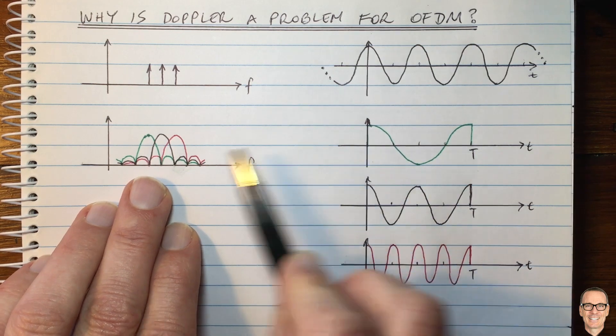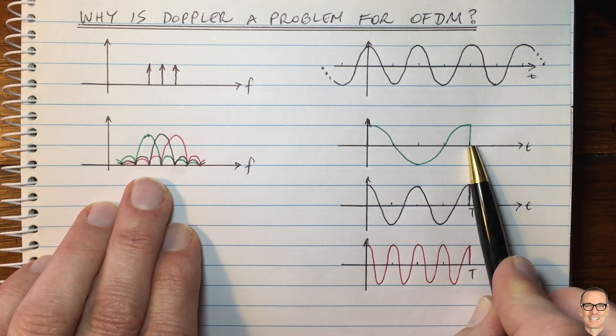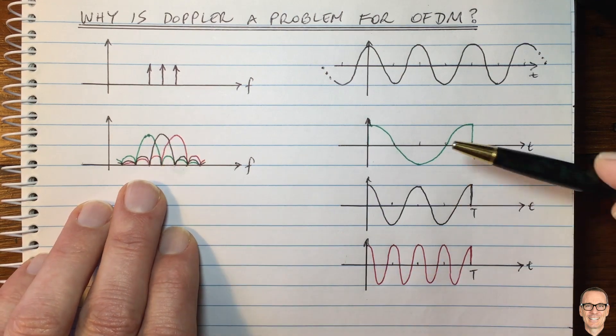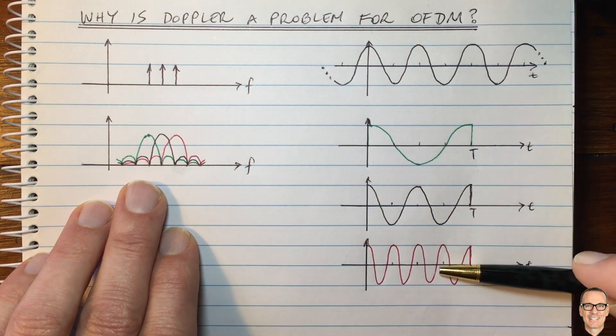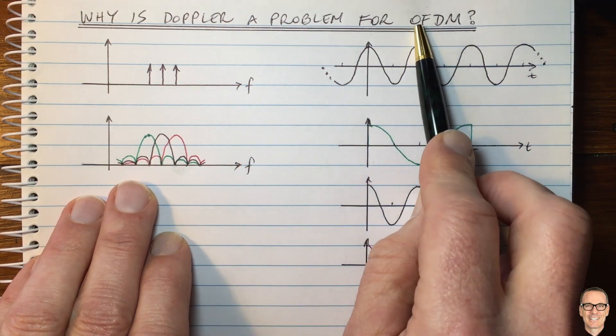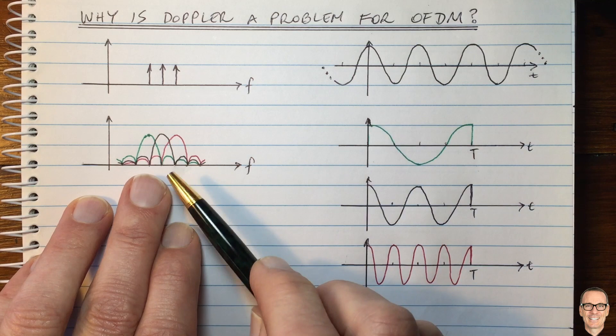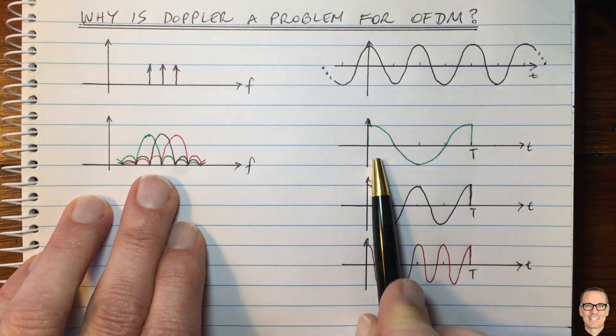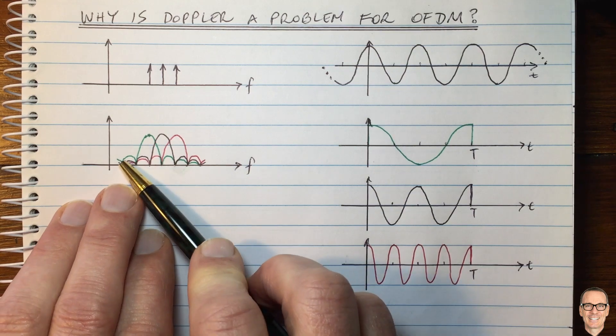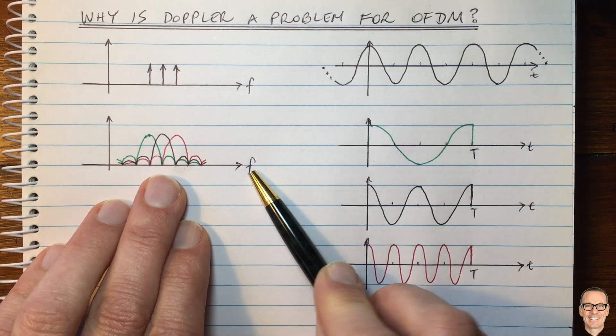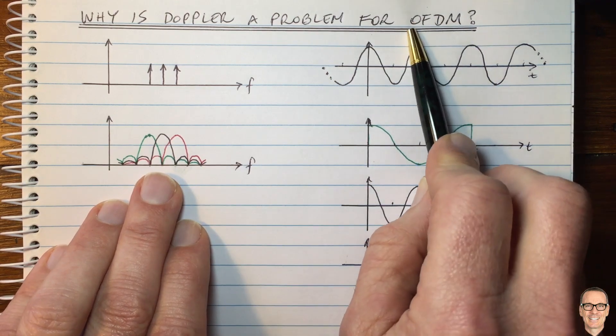So the Fourier transform of the square is a sinc, and so we get these different sinc functions at the different frequencies, and I've shown them here with green, black, and red. And, of course, in OFDM, they are called orthogonal, although we can see that all three waveforms are overlapping in time, and also they are overlapping in the frequency domain. So in what sense are they actually orthogonal?